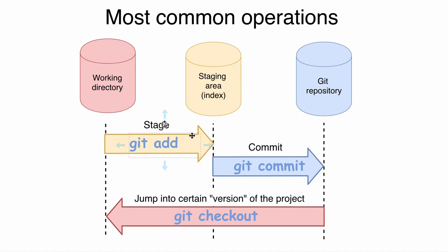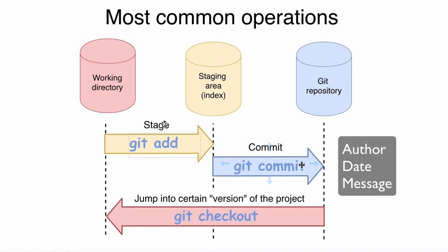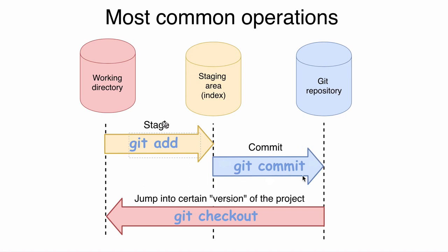After that, when files are already located in the staging area or index, we can commit changes using the git commit command. Every commit includes information such as author name, author email, date of the commit, and commit message or description. After committing, files that were located in the staging area are moved to the git repository, and the status of those files is changed to unmodified. That is how you move files from the working directory to the git repository — it is necessary to move them through the staging area.